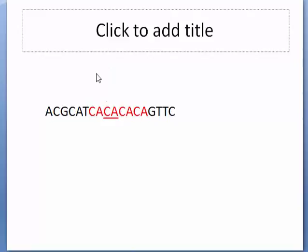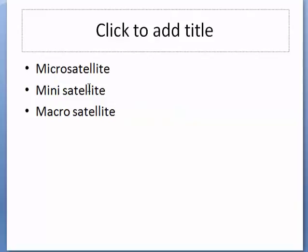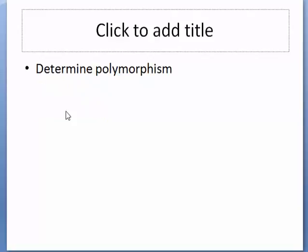If the repeated sequence is 10 to 20 base pairs long then that will be a Minisatellite, and if it is 100 or more that is called Macrosatellite. This type of Satellite DNA is used in determining polymorphism, that means differences between the organisms or differences between the DNA sequences of organisms are detected by this Satellite DNA.